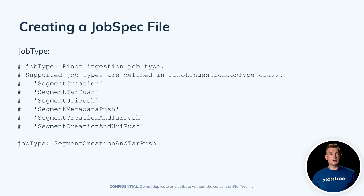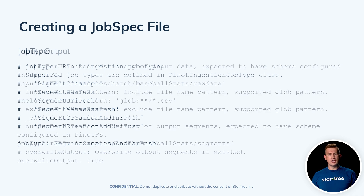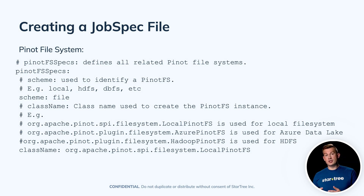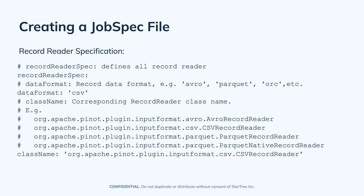With batch ingestion, you can upload either a file or a group of files from a folder. You can configure different patterns to find those files on the file system. The powerful batch ingestion framework supports ingesting files from a local file system, from HDFS, or any cloud storage like S3 or Azure. To read and understand the data, Pinot uses the record reader framework, which knows the format of your data — it can be Avro, CSV, Parquet, JSON lines, or JSON objects. There are many built-in configurations, and it's also quite extendable if none fit your use case.